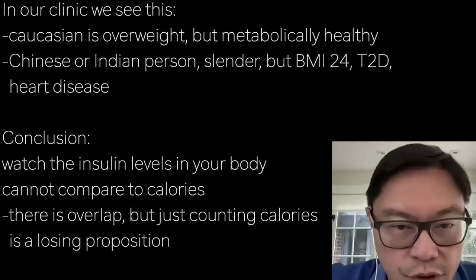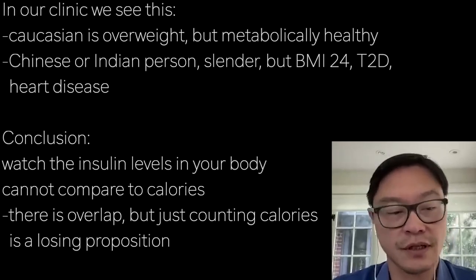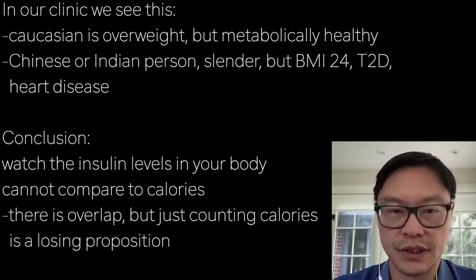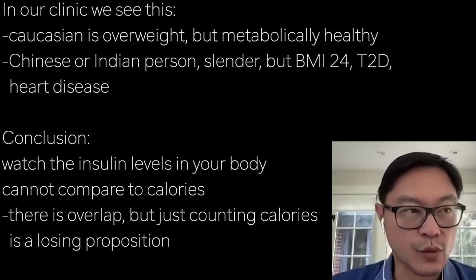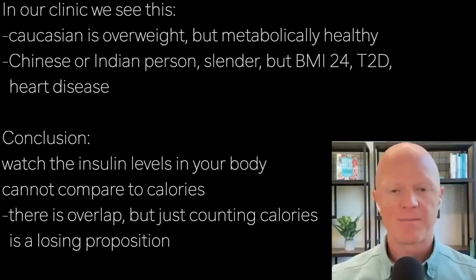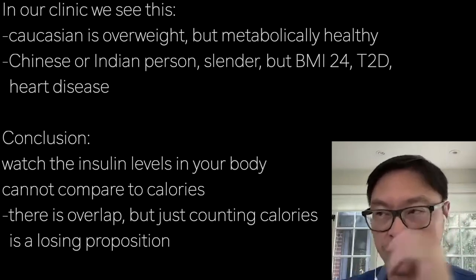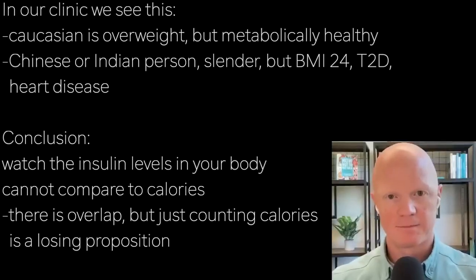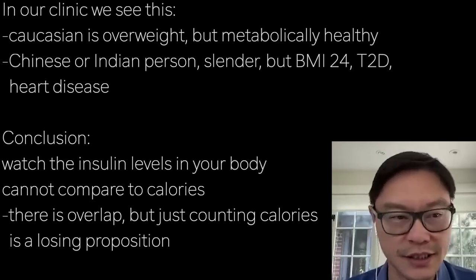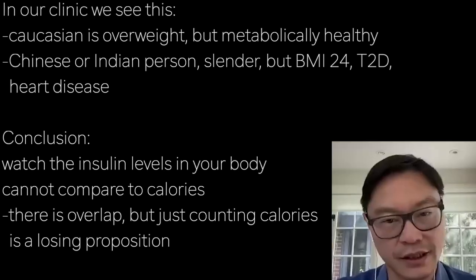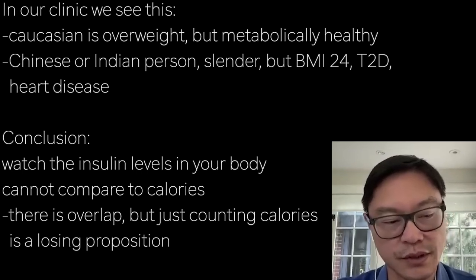This really explains a lot about what's been happening in the world, and especially the clinical differences across ethnicities. We see this frequently: a Caucasian patient who is quite overweight but not diabetic at all. And on the flip side, a Chinese or Indian patient — and Indians show this pattern a lot too — with a BMI of 24 and terrible diabetes and heart disease. That's the skinny fat phenotype, and this framework explains it well.